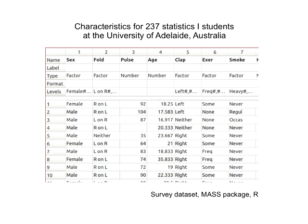What you can notice right away is that the variables are organized in the columns — it looks like a spreadsheet. This is how R presents data, but if you worked in Excel, SPSS, or SAS, it would also look like a spreadsheet. The variables are in the columns, and the individuals — the people — are in the rows. Each row represents an individual person, or an individual case or subject.